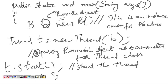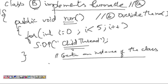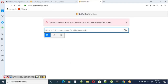The run method in class B will be executed, printing 'child' five times as output. In this way you can create threads either by extending the Thread class or by implementing the Runnable interface.